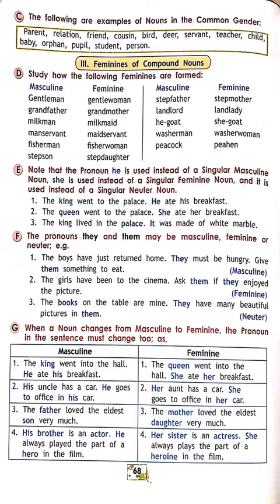Example: 'The king went to the palace — he ate his breakfast.' King is male so we use the pronoun 'he'. 'The queen went into the palace — she ate her breakfast.' Queen is a female noun so we use 'she'. 'The king lived in the palace — it was made of white marble.' Palace is a non-living thing, so it is a neuter noun, and neuter nouns are replaced with the pronoun 'it'.